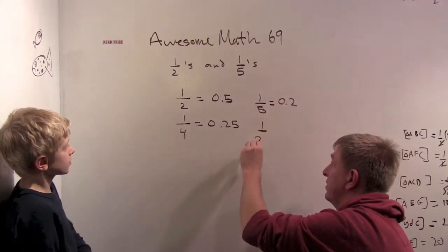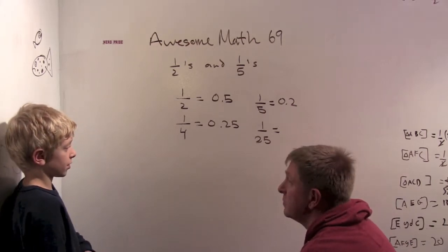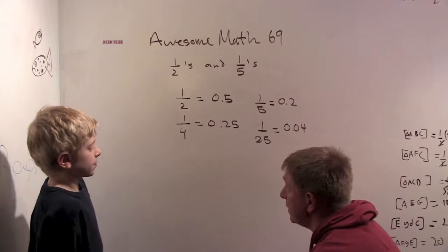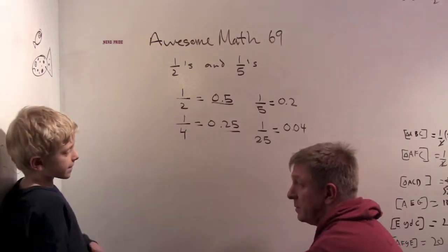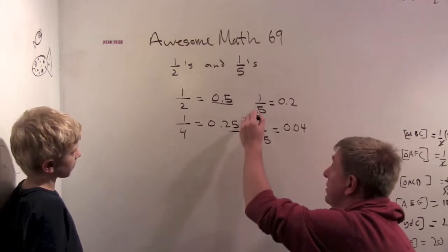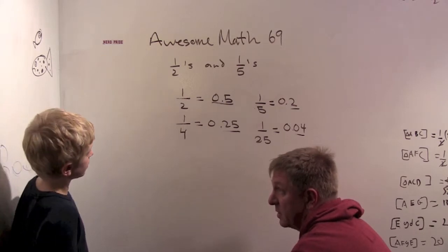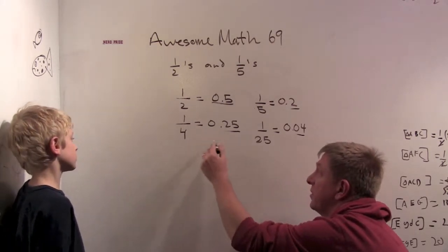How about one twenty-fifth? It was 0.04. So the powers of one half had powers of five, and the powers of one fifth had powers of two. That was really interesting, and it came from the fact that we could turn these into powers of ten.